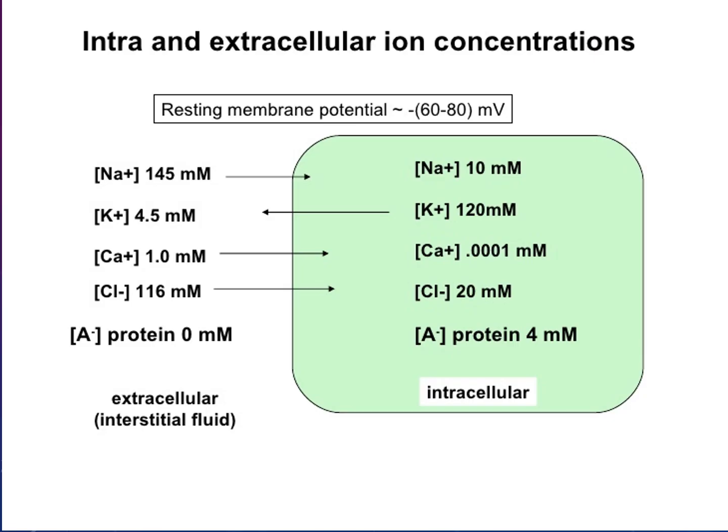Looking at extracellular ion concentrations, you can see that sodium is quite high on the outside and quite low in the intracellular compartment. Potassium is quite high intracellularly and quite low extracellularly. Calcium and chloride are also present, and calcium levels are decreased in the intracellular space. Chloride levels are also decreased intracellularly. Protein is also more present intracellularly. The sodium-potassium pump involves the existing membrane potential — free sodium moves in and out of the intracellular compartment.